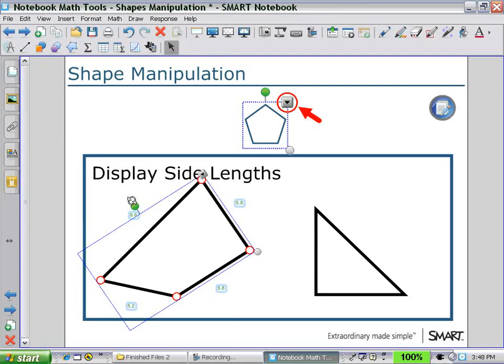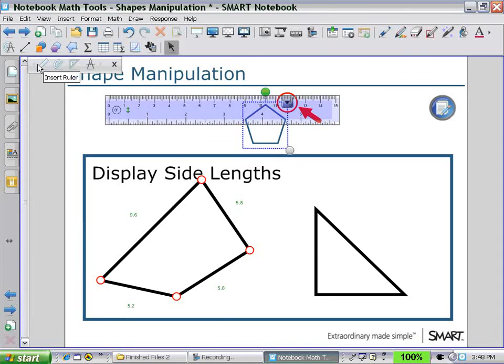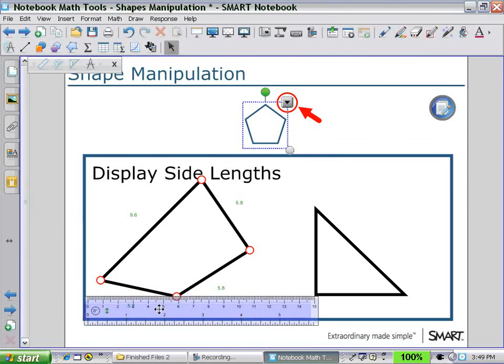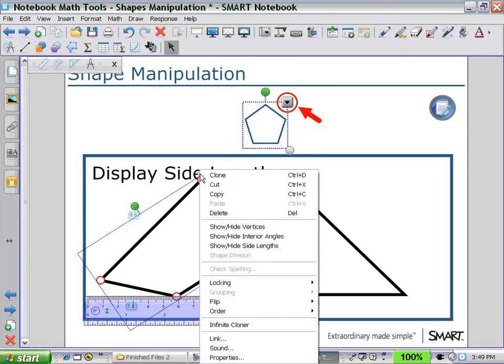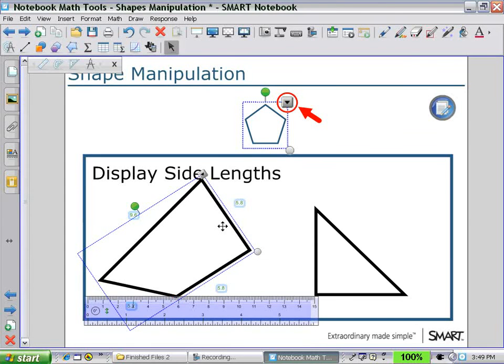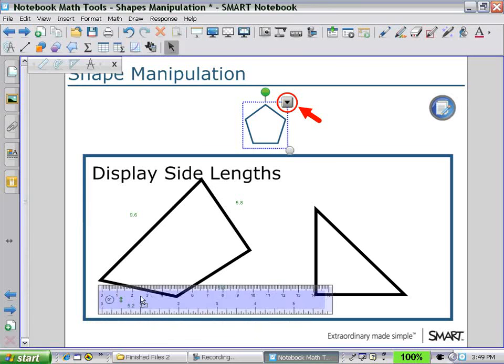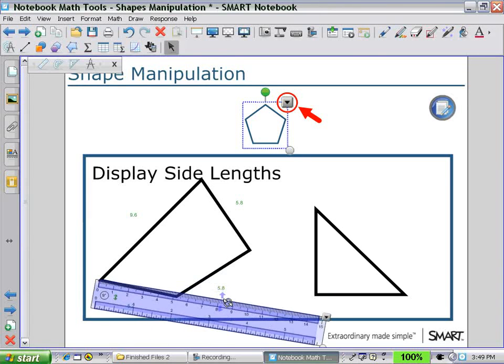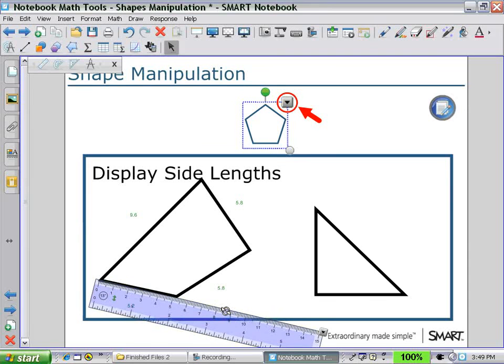The side lengths default to a metric system, and so are measured in centimeters, and we can show that using our ruler. And taking a measurement, let's hide the vertices and then take our measurement.